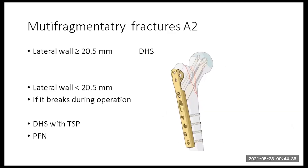Moving on to multifragmentary A2 fractures: if there is a thick lateral wall and the configuration is relatively stable, the DHS will suffice. If there is a lateral wall break during the operation, or the lateral wall is thin — either 20.5 millimeters or less — then the option is to use an additional trochanteric support blade or a proximal femoral nail.